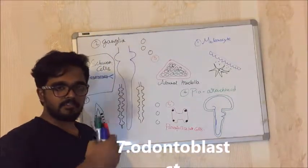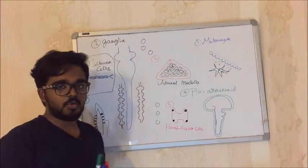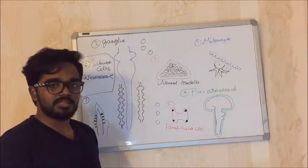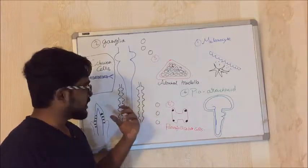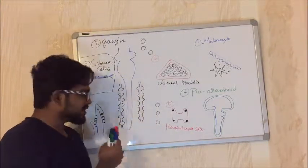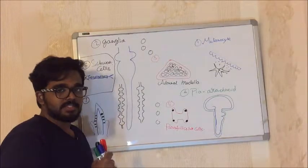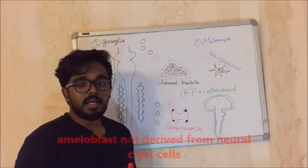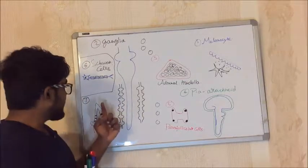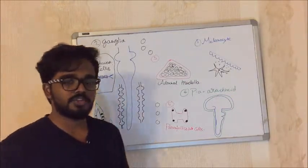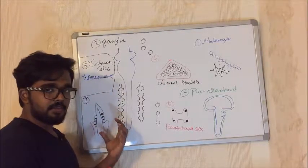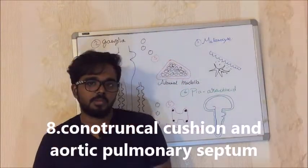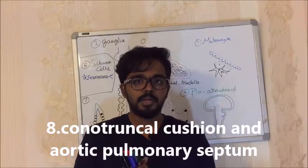The Odontoblast is also derived from Neural Crest Cells. In the teeth, there are layers: enamel, dentine, and the pulp. The dentine layer is formed by Odontoblasts, which are derived from Neural Crest Cells. The Ameloblast forms the enamel layer — however, the Ameloblast is NOT derived from Neural Crest Cells.